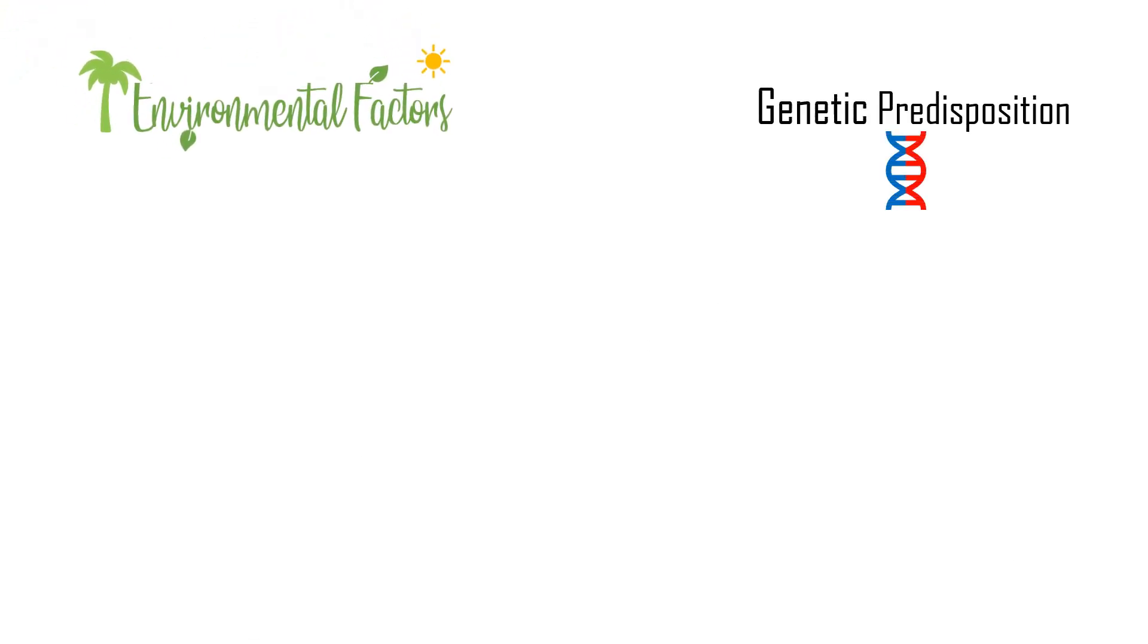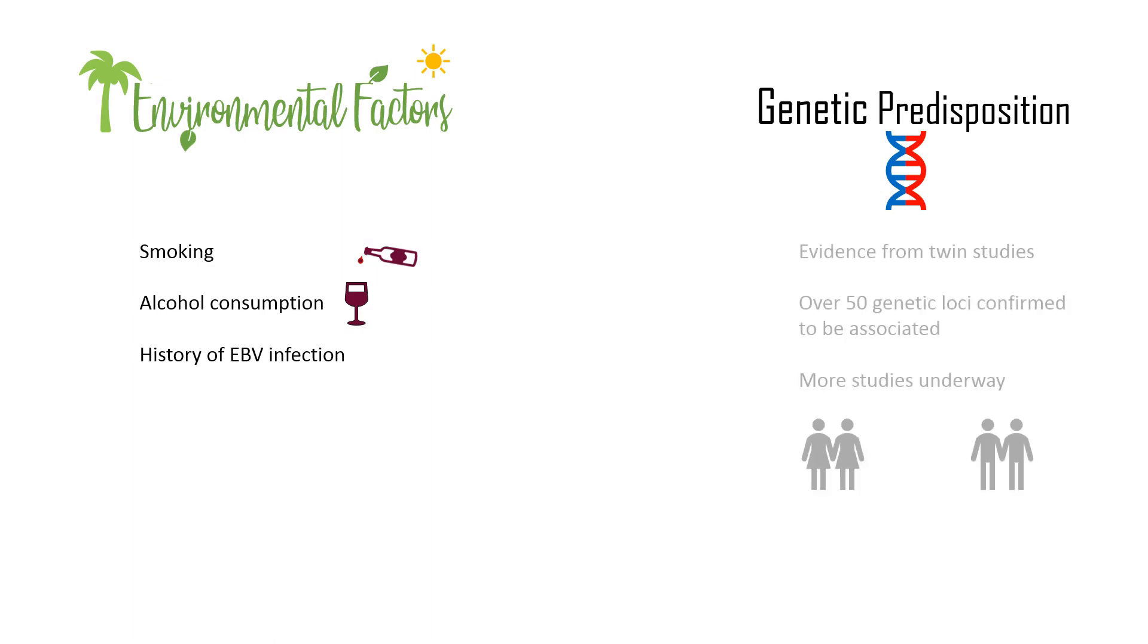Although we don't know the exact cause of multiple sclerosis, we have a pretty good idea of what is happening. A combination of environmental factors and genetic predisposition starts a degenerative process in the central nervous system.